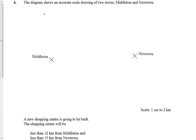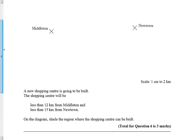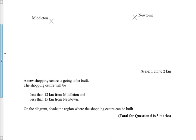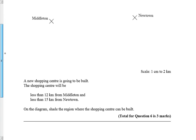Okay, question six. This is a construction question. We're given various information about Middleton and Newton. We've got them marked on a scale drawing of a map here. It says a new shopping center is going to be built. The shopping center is going to be less than 12 kilometers from Middleton and less than 15 from Newton. Shade the region where the shopping center can be built.